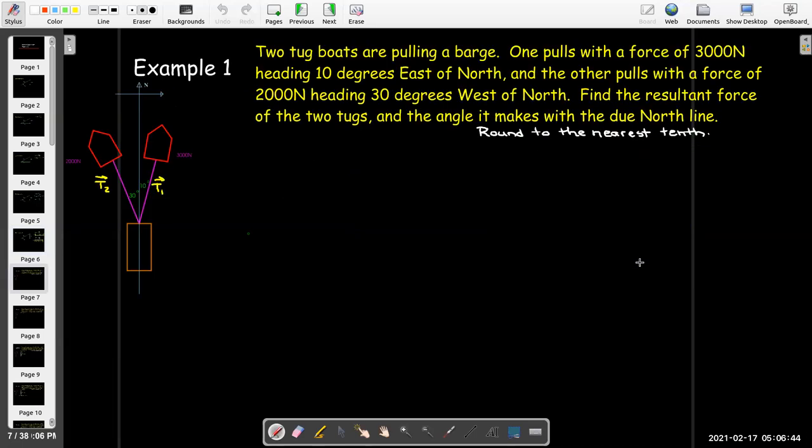Our first example: We have two tugboats and they're pulling a barge. One is pulling with a force of 3,000 newtons, pulling it mostly north but a little bit to the east. The second tugboat is pulling with a force of 2,000 newtons, veered off a little bit more to the west, making a 30-degree angle. We'd like to know the resultant force and what angle that force makes with the due north line.